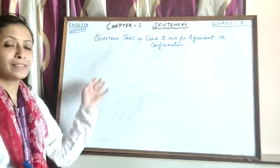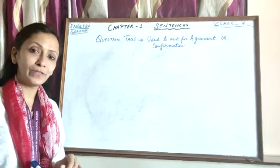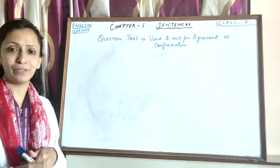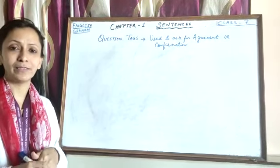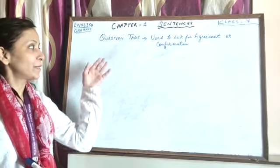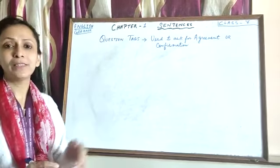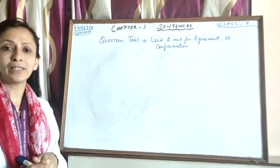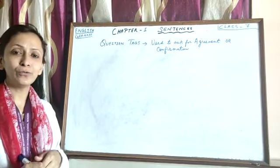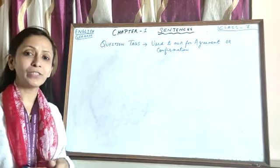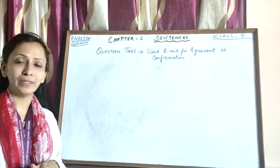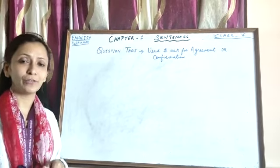Question tags fall under the category of interrogative sentences that we did in the first video in the types of interrogative sentences. Question tags are the questions that are used for asking confirmation of what is said in the statement. Just for confirming the thing, we use these question tags.